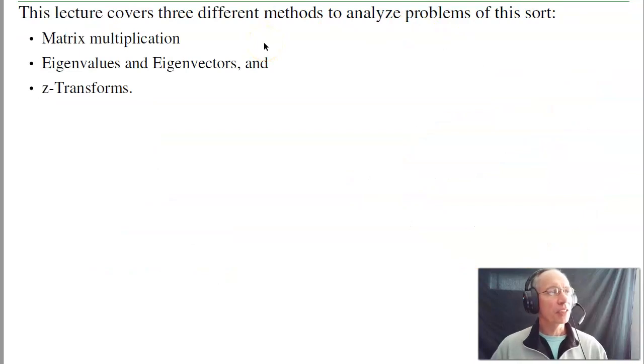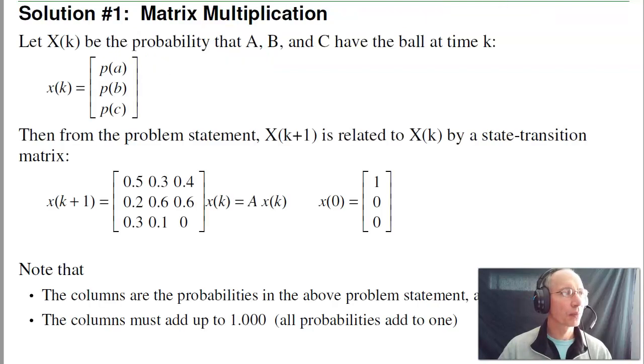This lecture covers three different ways to analyze this type of problem: matrix multiplication, the use of eigenvalues and eigenvectors, and Z-transforms. To start out using matrix multiplication, I'm going to define three states. Let X be the state of the system. That's got three elements: the probability that A has the ball, probability that B has the ball, and probability that C has the ball.